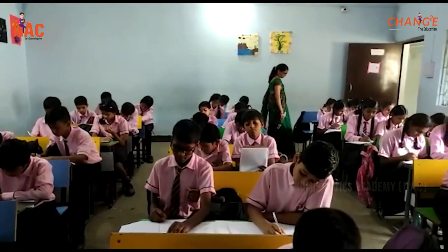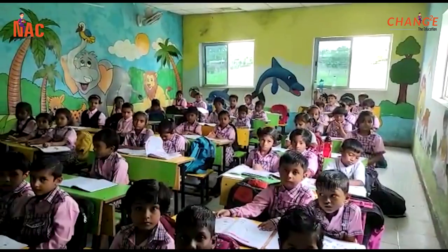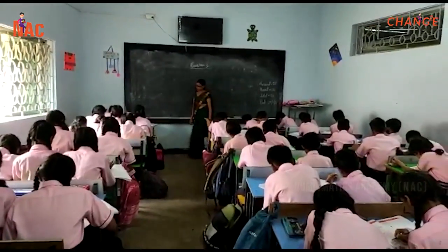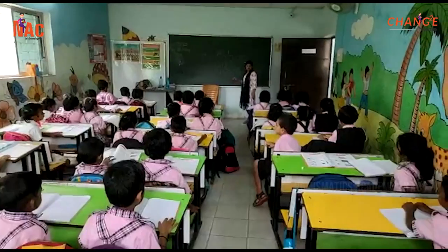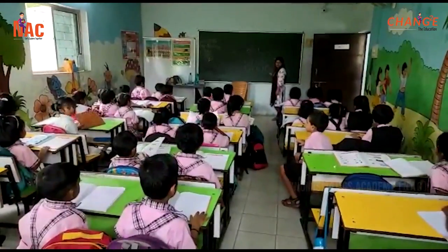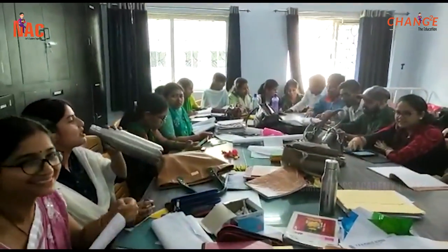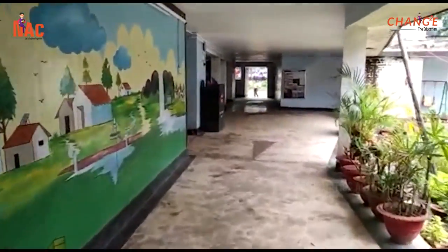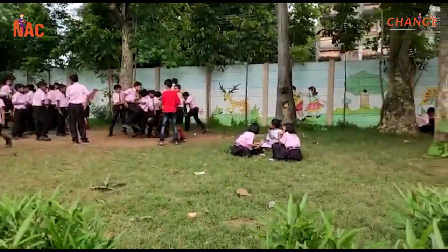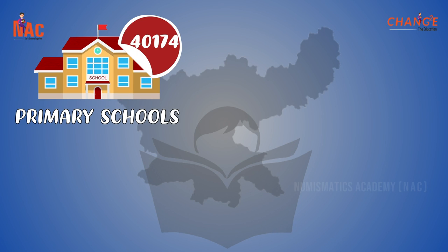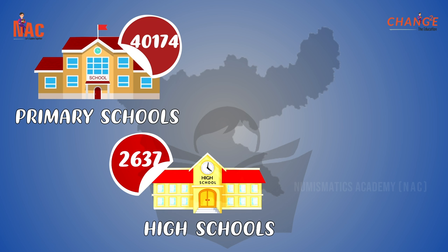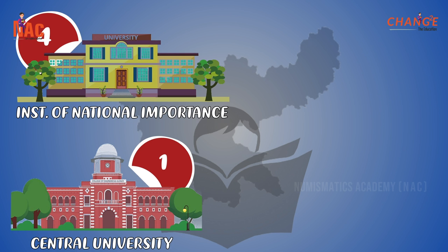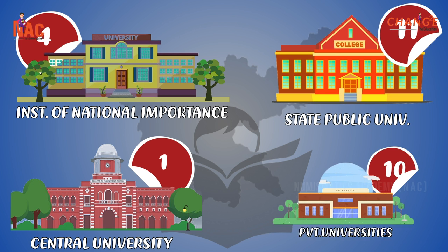Jharkhand has considerably improved its education system in terms of faculty access and child enrollment. At the elementary level, the teacher-pupil ratio averages 1 to 39. To boost teacher supply, 16,349 elementary teachers and 1,719 secondary teachers were recruited in 2015 and 2016. There are 40,174 primary schools, 2,637 high schools, and 522 higher secondary schools in the state, along with one central university, four institutes of national importance, 11 state public universities, and 10 private universities.